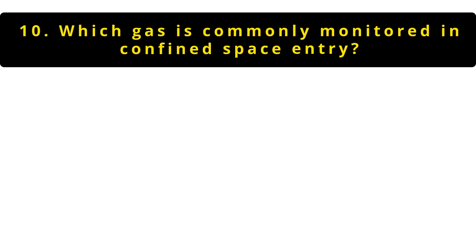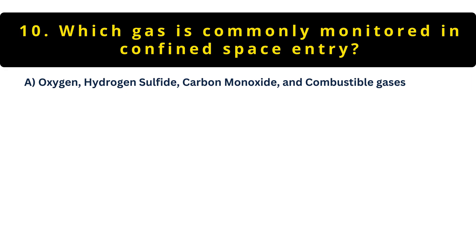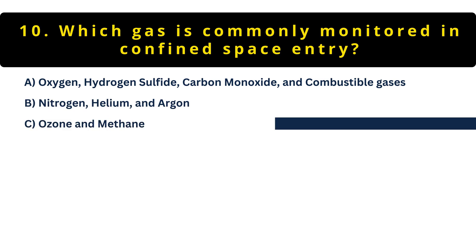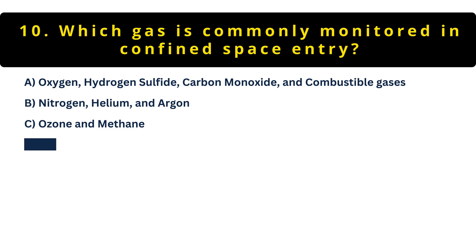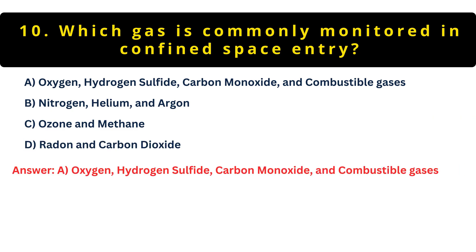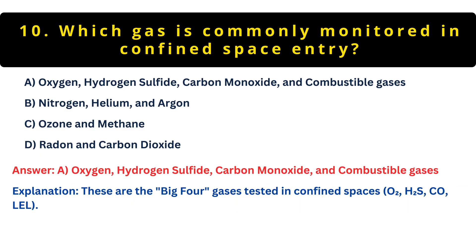Question 10: Which gases are monitored in confined space entry? Option A: Oxygen, hydrogen sulfide, carbon monoxide, and combustibles. Option B: Nitrogen, helium, argon. Option C: Ozone and methane. Option D: Radon and CO2. A is correct — O2, H2S, CO, and combustibles are the big four. Low oxygen or high toxic gas levels can be deadly. Testing is required before entry.